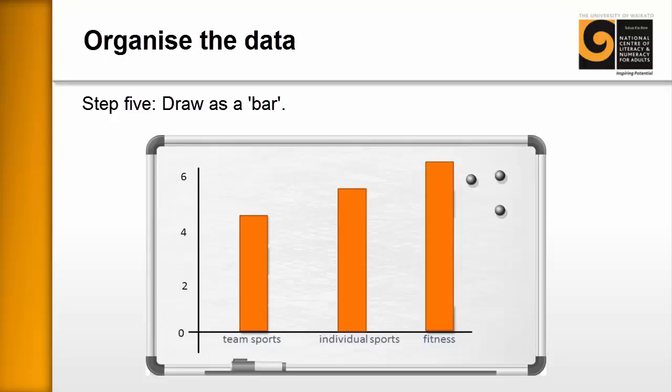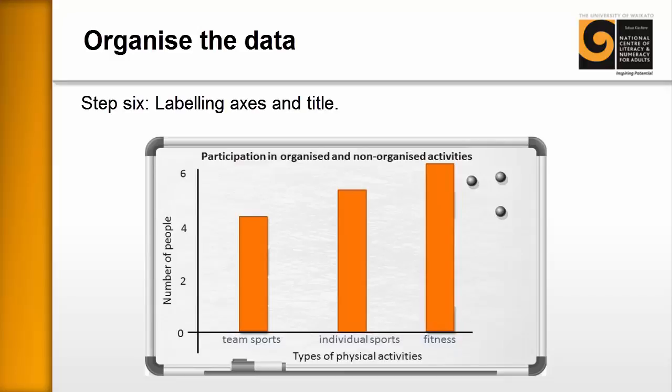The idea is to remove the post-its and replace them with a bar. The best way is to outline the post-its with a whiteboard marker and then remove them. For step six, labelling the axes and the title, ask the learners what more can be added to make the graph meaningful. Add a title — for example, 'Participation in organized and non-organized activities' — label the bottom axis 'Types of physical activities' and the side axis 'Number of people doing them.' At the end, you have a graph on the whiteboard that learners have constructed themselves from their own data.